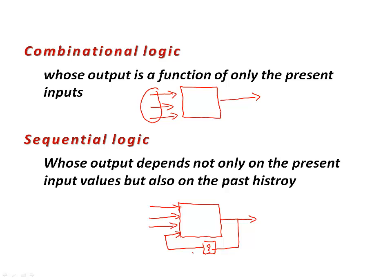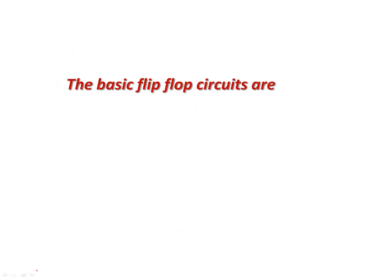So whatever you put over here accordingly the circuit will behave. So depending on the current output value and the current input values the circuit behaves and that is called the sequential logic circuit. Further we want to talk about the types of flip-flop. The first one is called the RS flip-flop. RS flip-flop stands for set and reset. These are two important terms. Set means the output is taken to a value 1. The reset means the output is taken to a value 0.